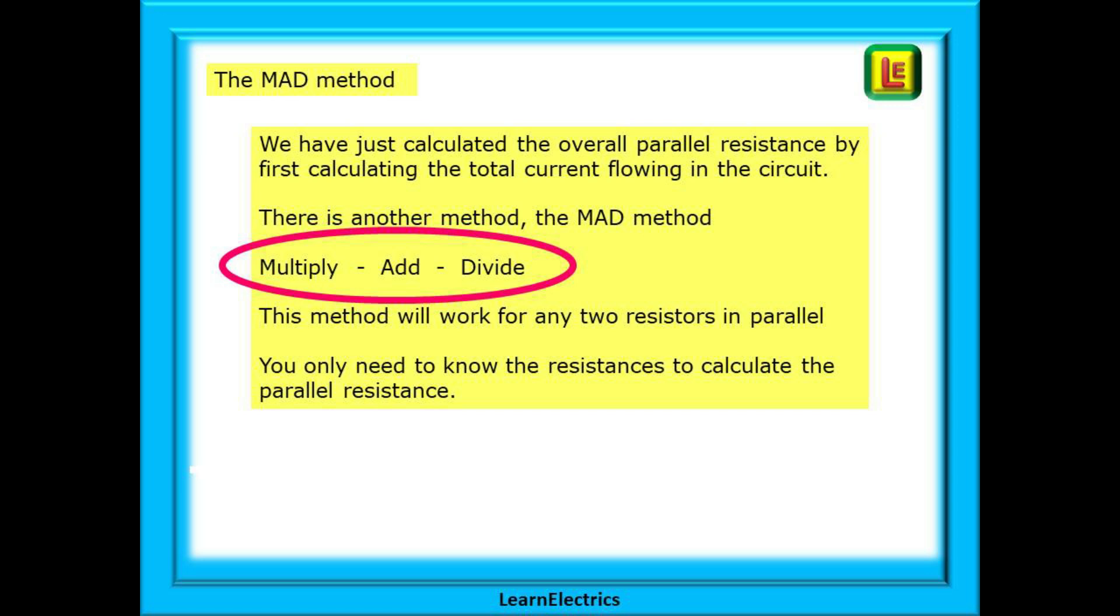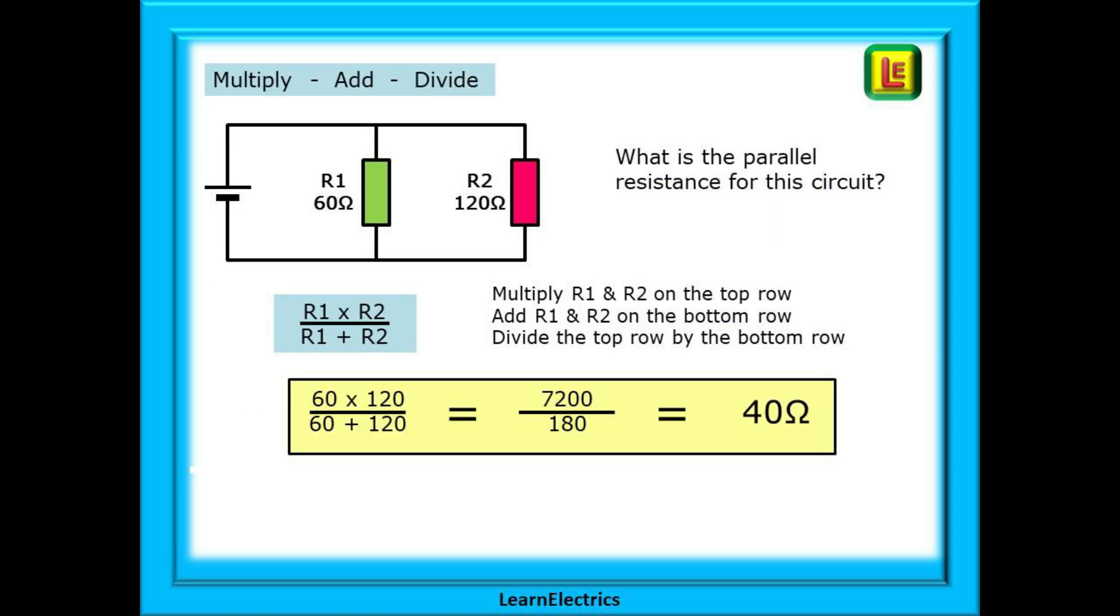There is another method which I call the MAD method—MAD for multiply, add, and divide. This method will work for any two resistors in parallel, and you only need to know the individual resistances to be able to calculate the parallel resistance.